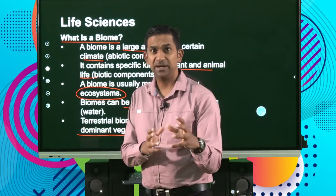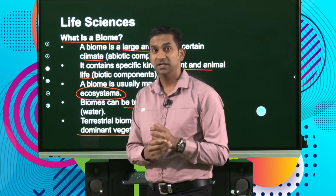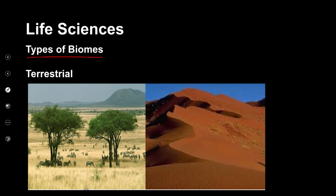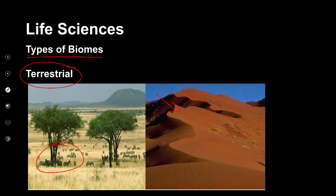When we look at aquatic biomes, we unpack the nature of the water and the living components that define the type of biome. Broadly, biomes are either terrestrial or aquatic. A grassland biome has a rich diversity of grasses and herbivores, while a desert biome is found in areas with extremely high temperature, arid conditions, and sparse vegetation. The type of organisms found are influenced by the availability of food, climate, and other abiotic factors.